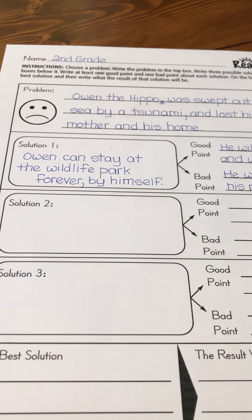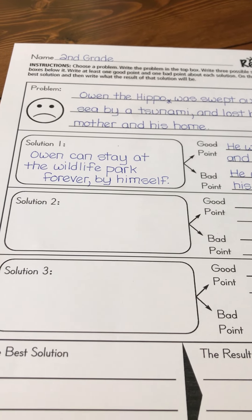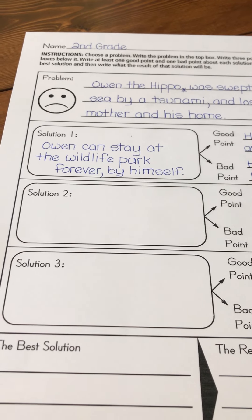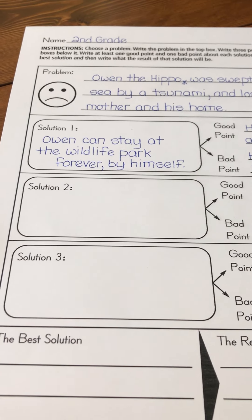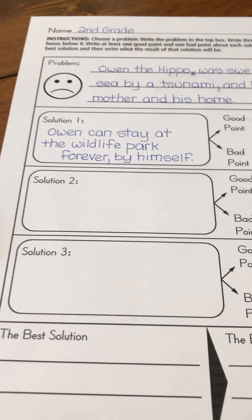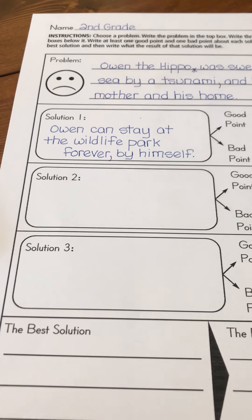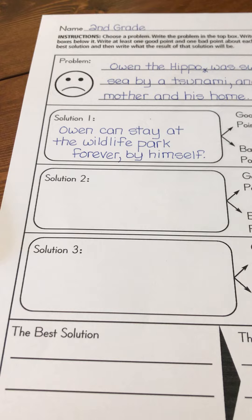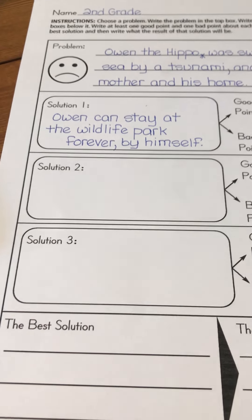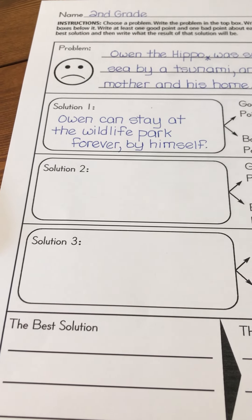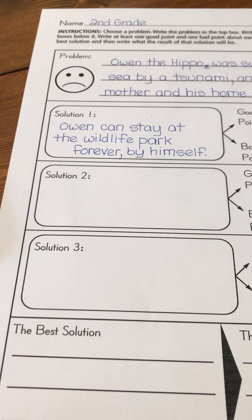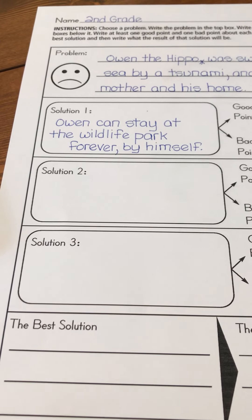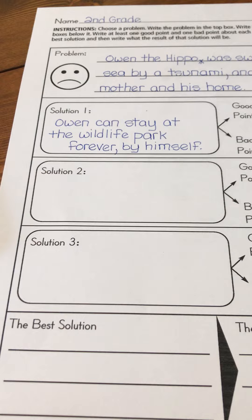Hi second graders. Today we're going to review problem and solution. Remember, a story is usually about a character solving a problem, and a problem is something that is difficult to deal with and must be solved, such as Owen losing his mother. A solution is the way the problem is solved, such as Owen finding someone to take the place of his mother.